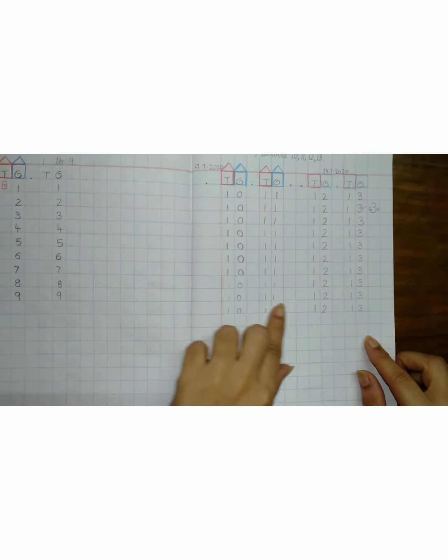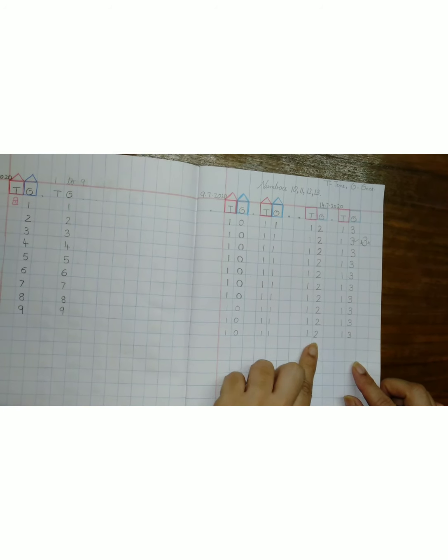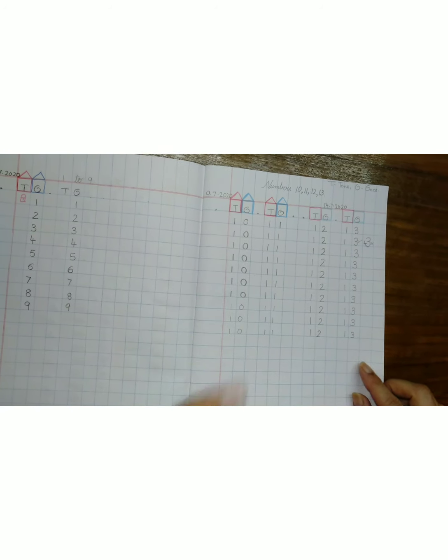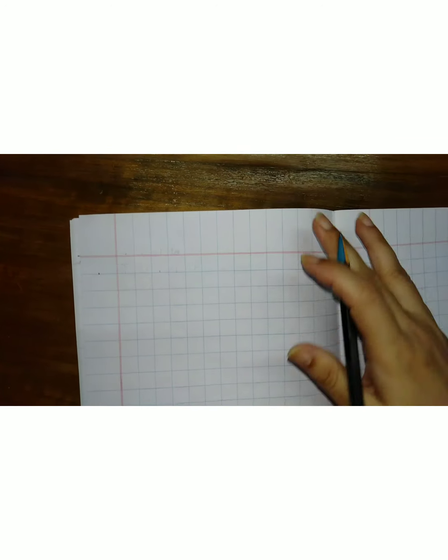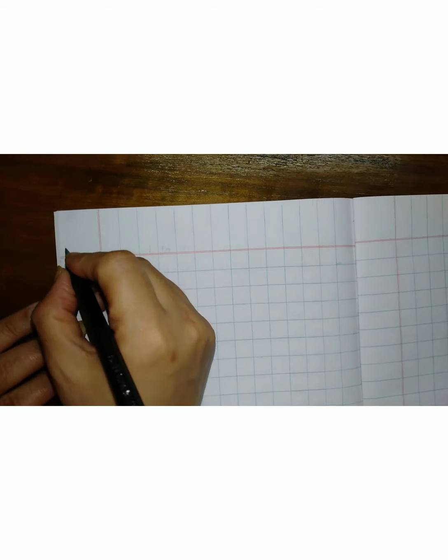Children. You finished writing ten, eleven, twelve, thirteen. So we are going to turn the page and we are going to do the work on this page. So you are going to do the setting with ma'am. Let's write the date today.